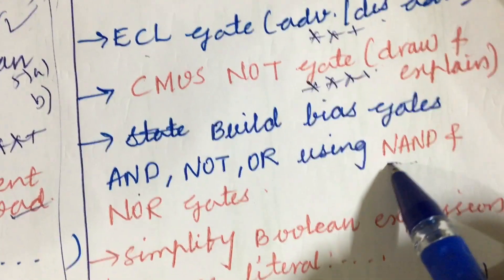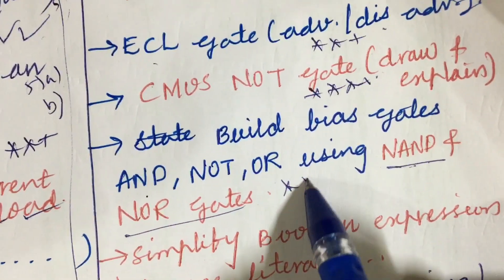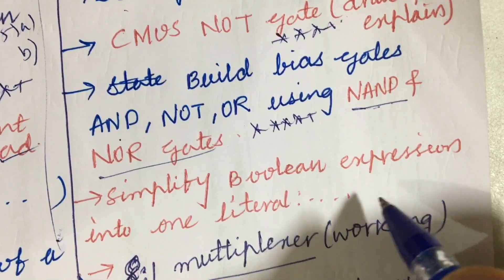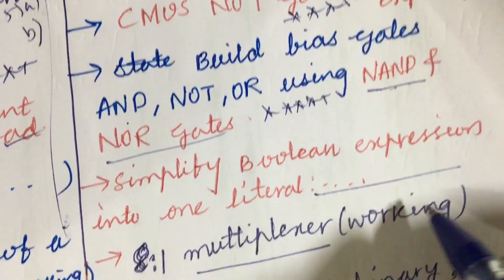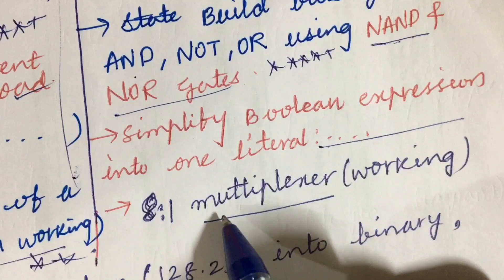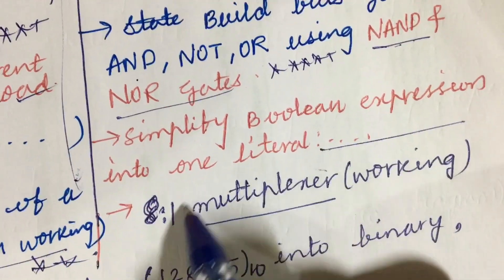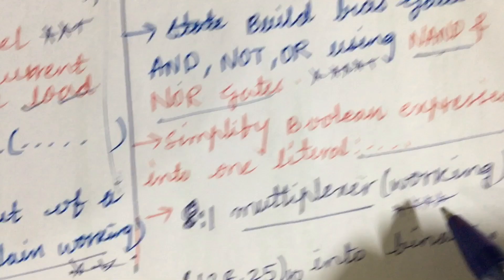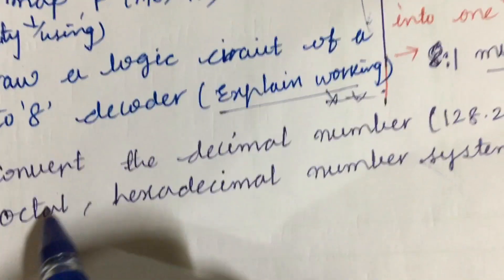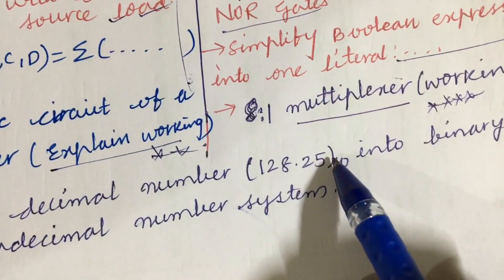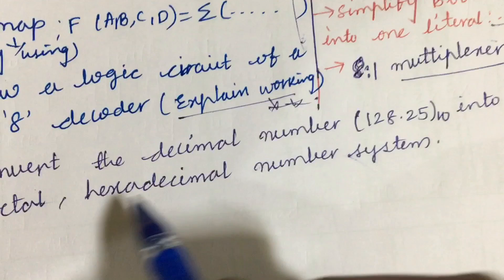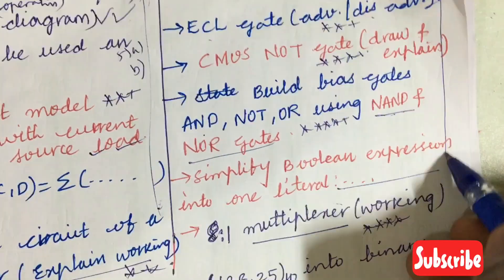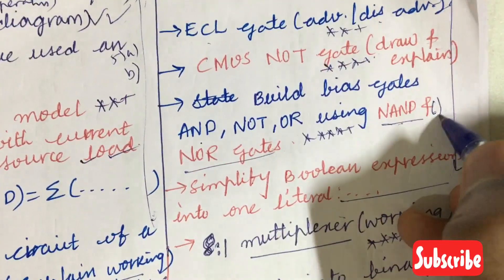Simplify Boolean expression in one literal, a given statement, as well as explain the working of 8-to-1 multiplexer and define what a multiplexer is—this is also one of the very important and gunshot questions. Sometimes they ask convert the decimal number 128.25 of 10 into binary, octal, hexadecimal number system. From this part we can expect 6A as well as 6B.